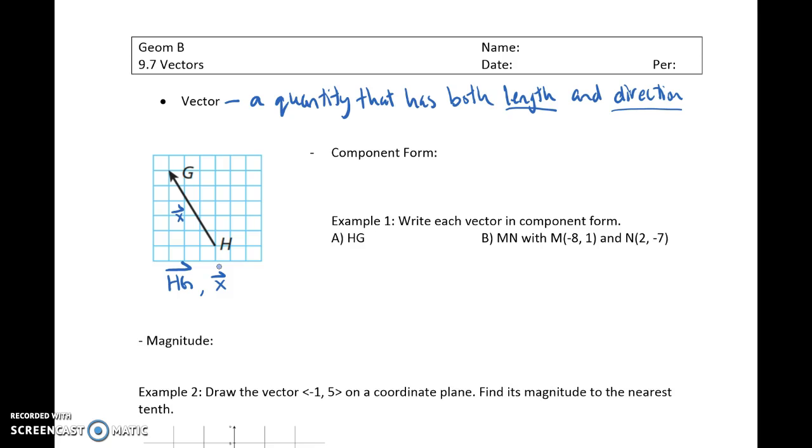Remember, the component form is what we used a lot in transformations when we were talking about translations, and that's the format with these pointy brackets, x comma y, where x is the horizontal change and y is the vertical change.